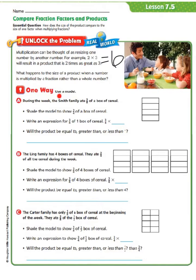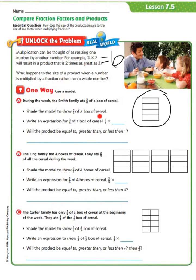One way of doing this is to use a model. During the week, the Smith family ate 3 fourths of a box of cereal. Over here this represents our box of cereal, and our denominator is 4, so the box is divided into 4 parts. We're going to start by shading the model to show 3 fourths of a box of cereal — let's shade 3 of these pieces.